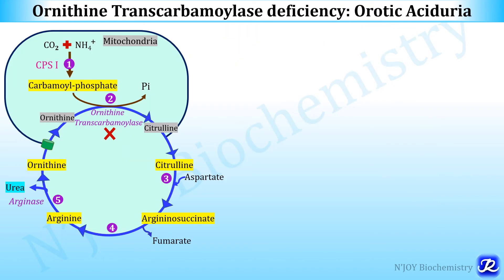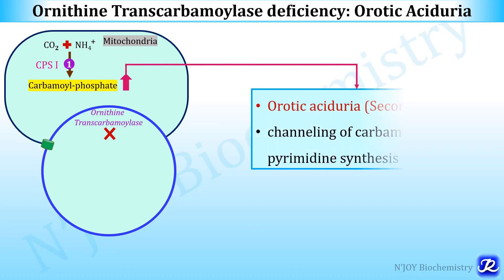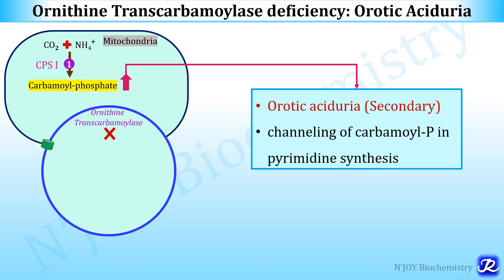Ornithine transcarbamylase (OTC) deficiency also leads to orotic aciduria. OTC catalyzes step 2 of the urea cycle — formation of citrulline from ornithine and carbamoyl phosphate. If OTC is defective, citrulline cannot be formed, carbamoyl phosphate accumulates in the mitochondria, enters the cytosol, and is channeled into pyrimidine synthesis, causing overproduction of orotic acid. This is called secondary orotic aciduria.